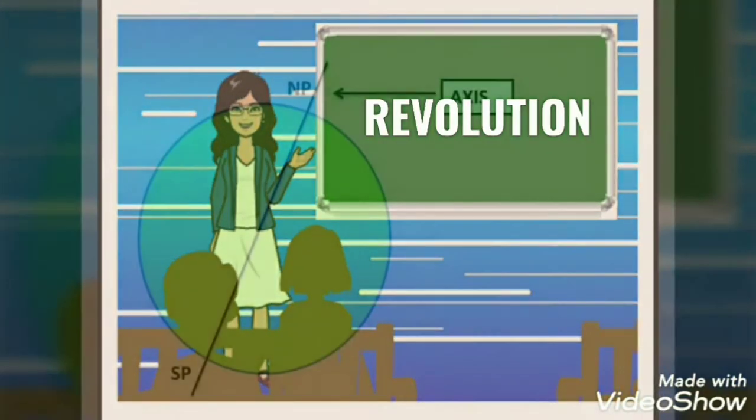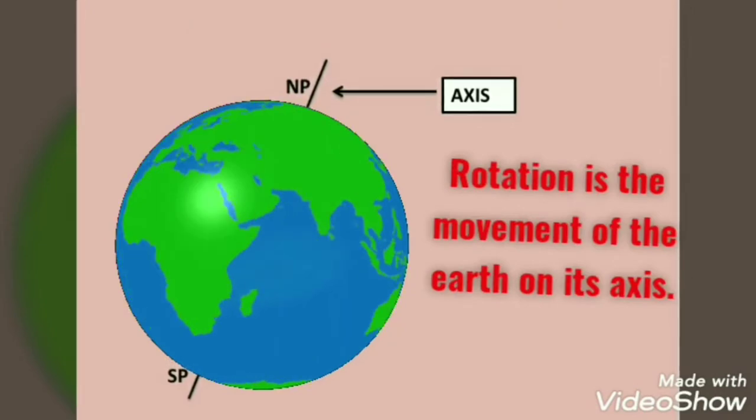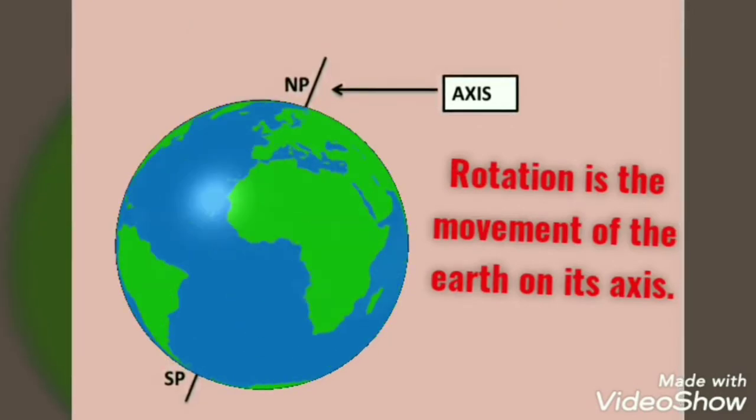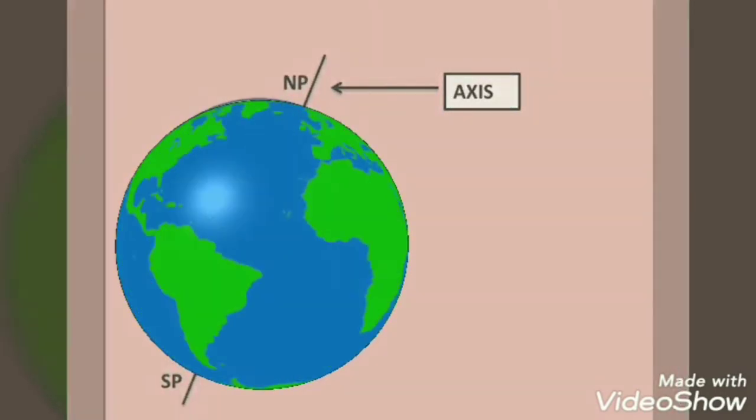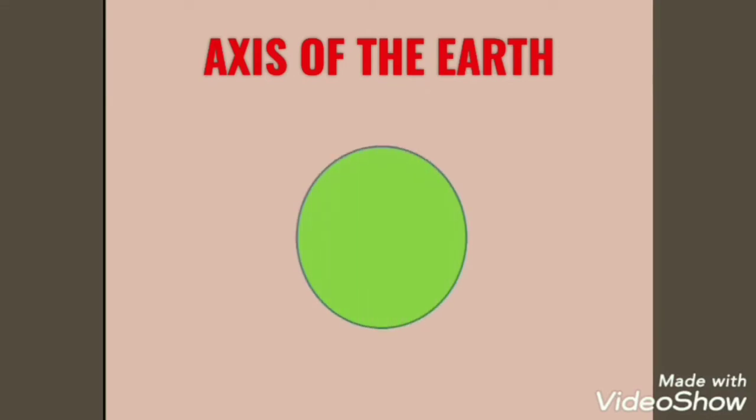Rotation is the movement of the earth on its axis. Do you know what is axis? You have studied in the previous chapter that the axis of the earth is an imaginary line drawn from the north pole to south pole through the center of the earth. Here it should be noted that the axis of the earth is not a vertical line. It is tilted which you can see in the diagram.